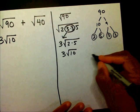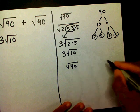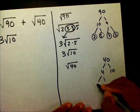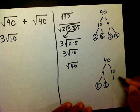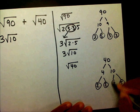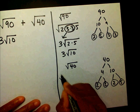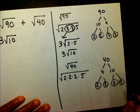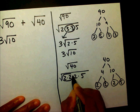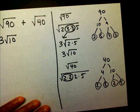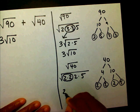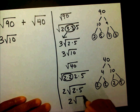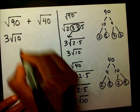Now I'm going to simplify radical 40. I'll make a factor tree. Underneath my radical I have 2 times 2 times 2 times 5. I know that 2 times 2 is 4, and the square root of 4 is 2. I put that on the outside, and the 2 and 5 stay inside. That's going to give me 2 radical 10.